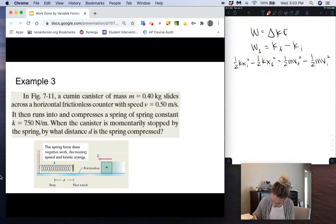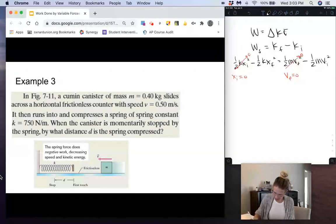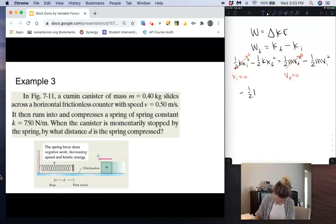Because x initial equals zero, this whole term cancels out. Now we also know that that cumin canister is going to compress the spring and then slide to a stop. So we know that the final velocity equals zero, so that means this whole term cancels out. So what we end up getting here is a negative one-half kx final squared equals a negative one-half mv initial squared.